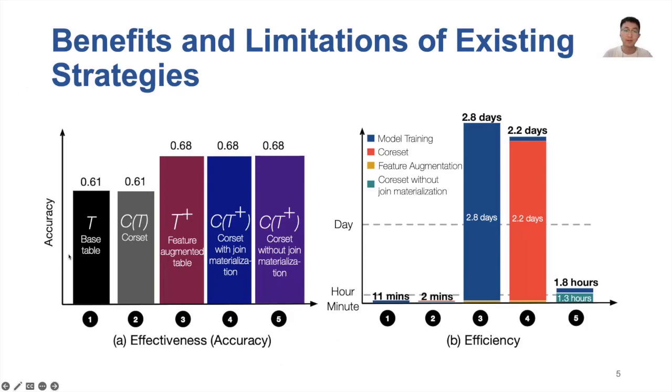The first choice is training with the base table. If we train a machine learning model using the base table T for a multi-classification task, the accuracy is relatively low, and it uses 11 minutes for training. Secondly, if we first compute the coreset of the base table, and then train a machine learning model using the computed coreset, we can also achieve a similar accuracy, but use 2 minutes in total for selecting the coreset and training with the coreset. This shows that using coreset can significantly reduce the training time without sacrificing the accuracy.